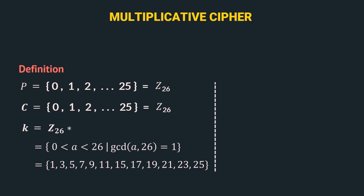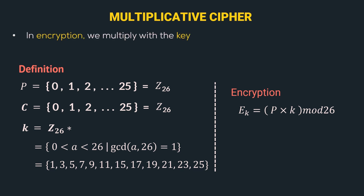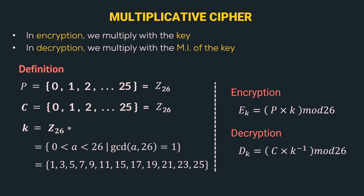Let's look at the encryption and decryption algorithm. The encryption algorithm is ek = p × k mod 26 — we multiply the plain text with the key k and apply the mod 26 operator. For decryption, the algorithm is dk = c × k⁻¹ mod 26, where k⁻¹ is the multiplicative inverse of the key k. We have already covered how to calculate the multiplicative inverse in the previous video. To get the plain text, we multiply the ciphertext with the multiplicative inverse of the key and apply mod 26.